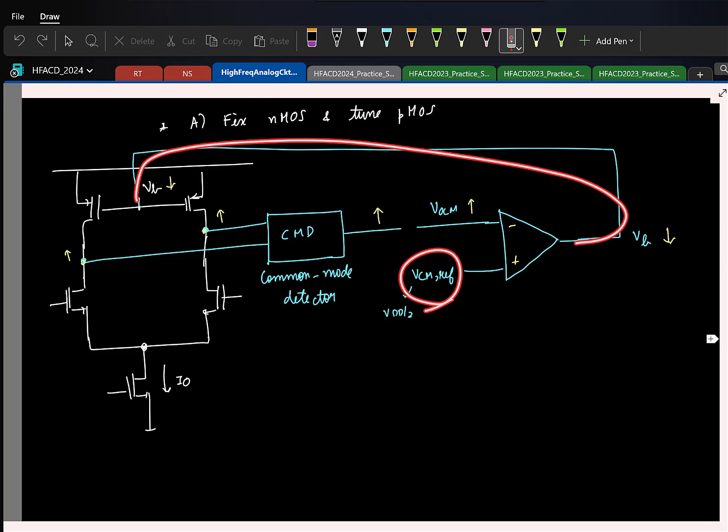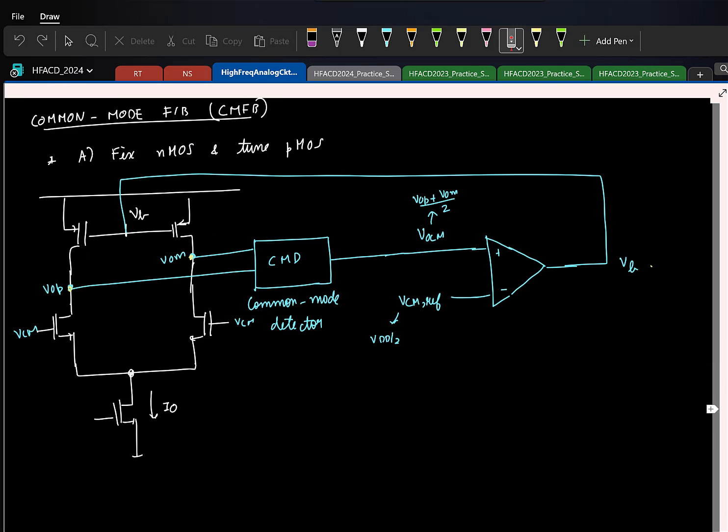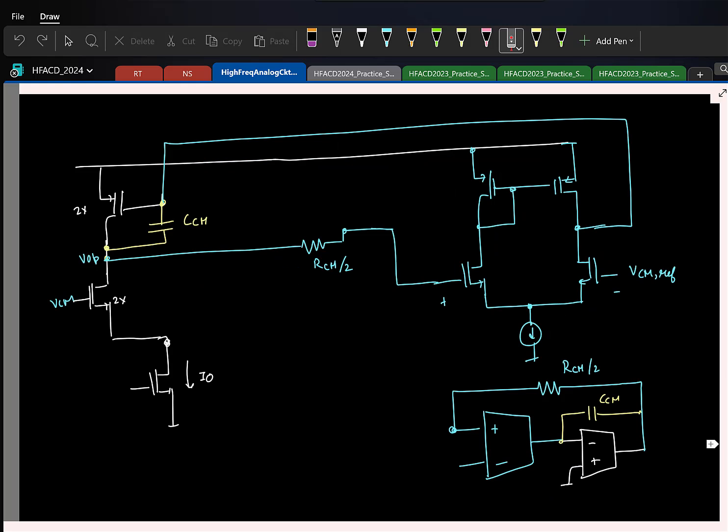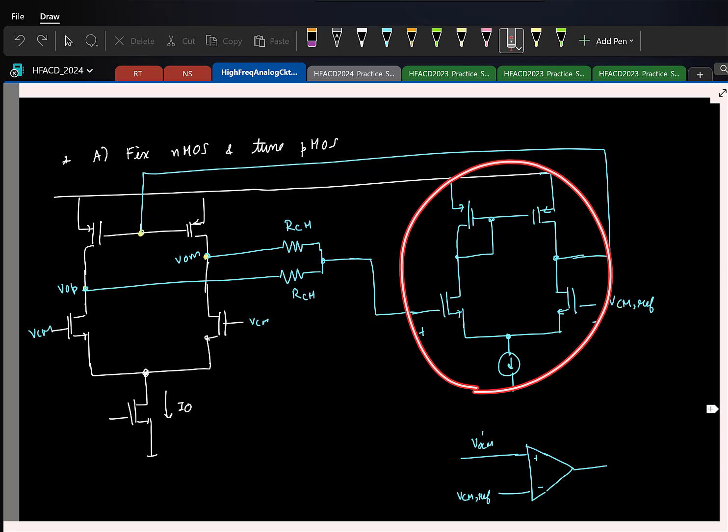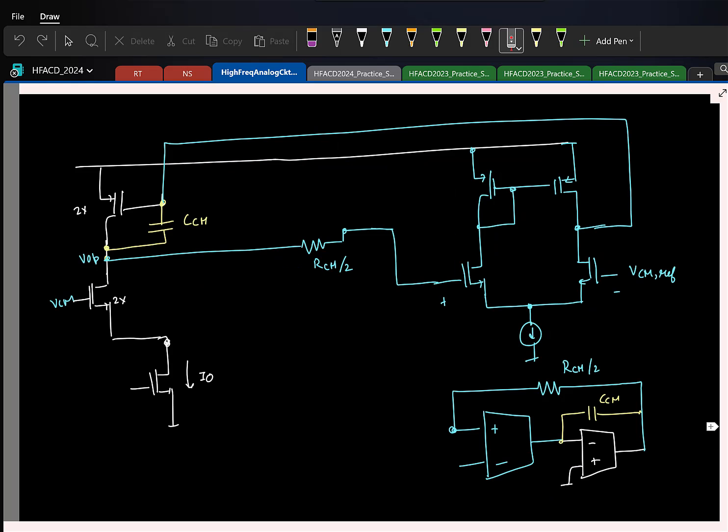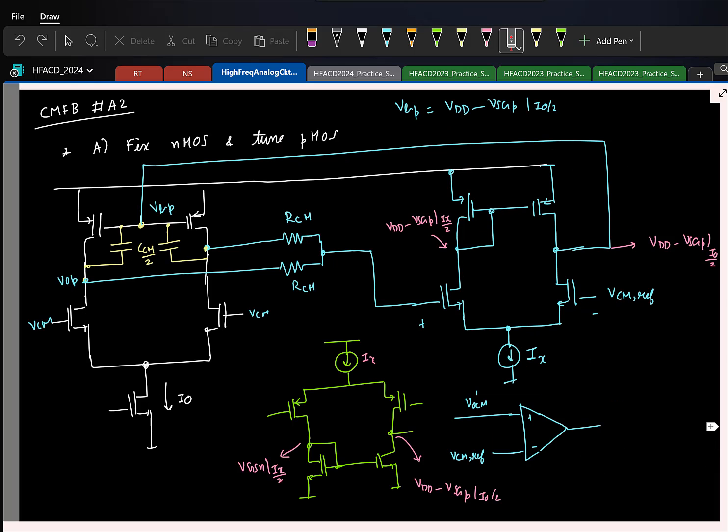We saw two implementations: one was without any amplifier wherein you sense the common mode and directly connect it to the gate. This works but the issue was the common mode was set to some VDD minus VSG that was completely not under your control. To exercise better control on the output common mode we have to use an additional amplifier, and when we did that we saw that with respect to the common mode signals it looks like a two stage OTA. For the common mode feedback loop we need a separate compensation and that we did using Miller.